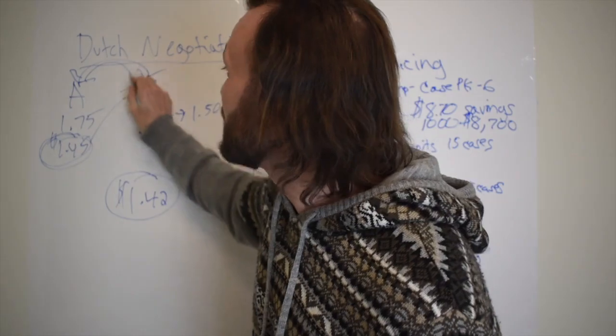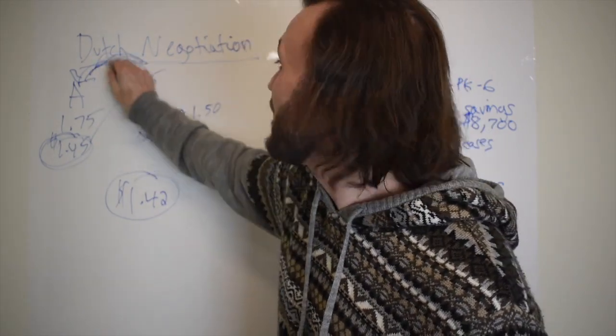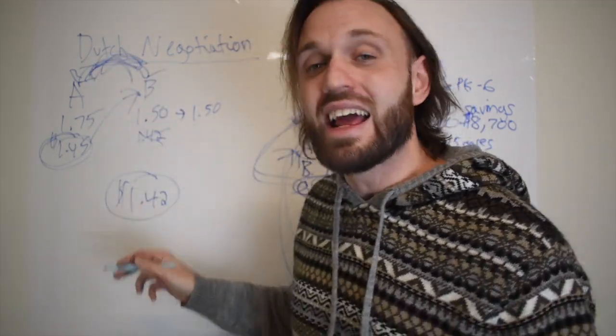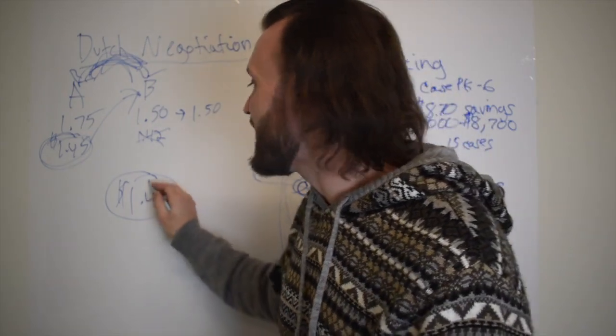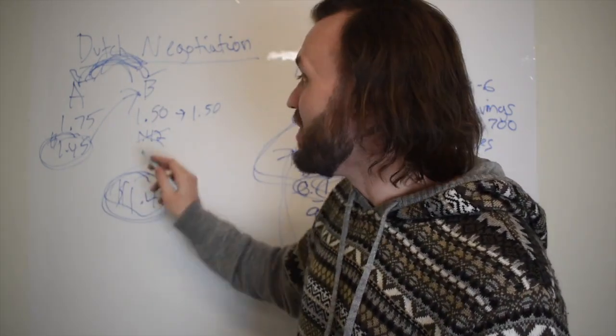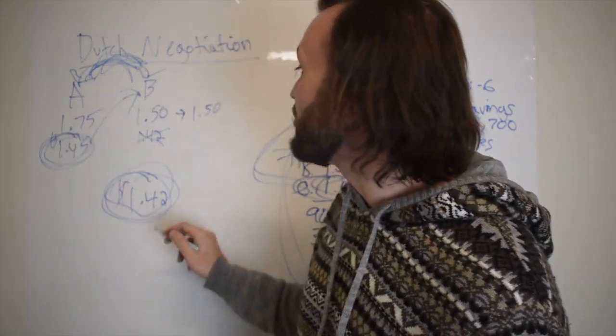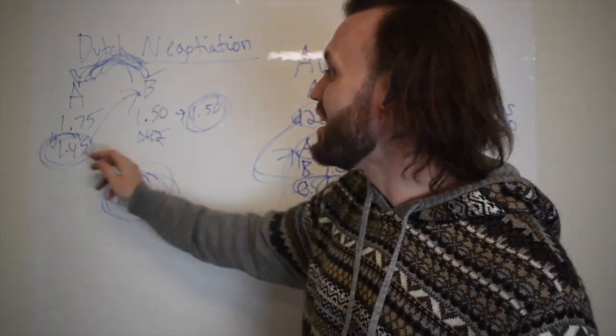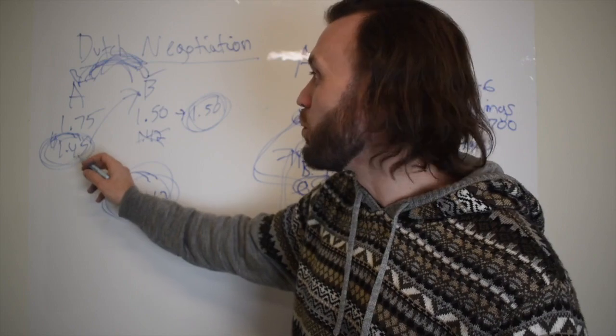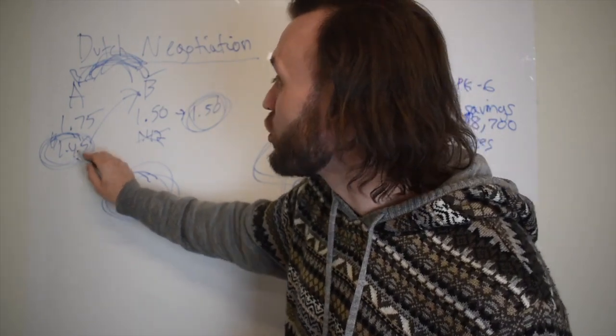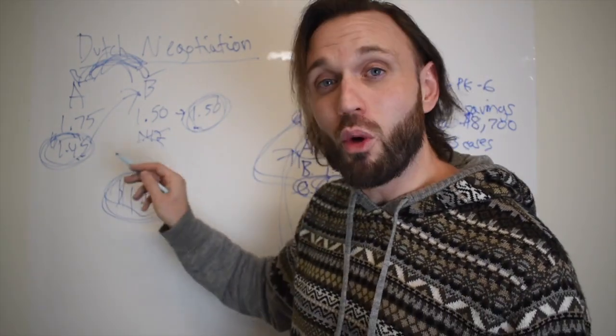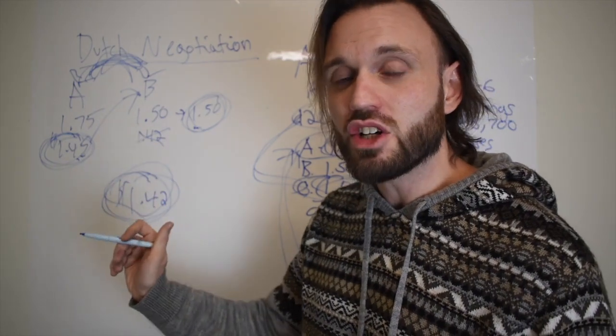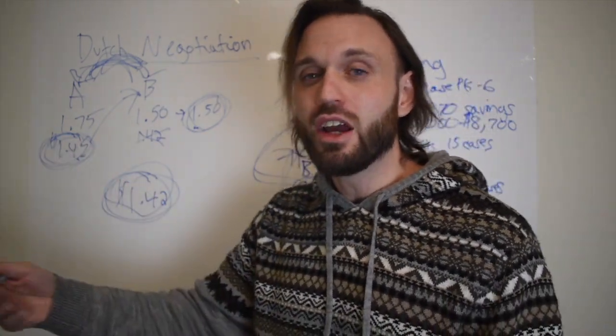Now there are instances where they just can't get to this $1.42, and this distributor might be stuck at $1.45 and this distributor might be stuck at $1.50. Then obviously you go with distributor A because they're at $1.45. But if that's their lowest, if you can get them lower, you can pin them against each other and keep communicating with your account rep.